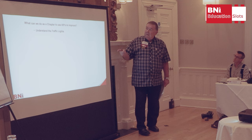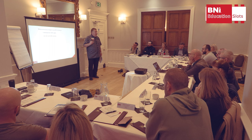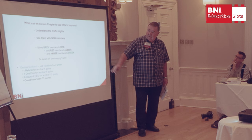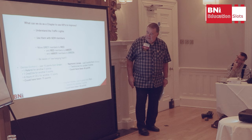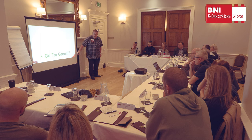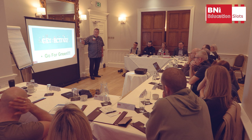So how can we become better? We need to understand the traffic lights — hopefully after today you understand a bit more, and I'm happy to have one-to-ones to explain them further. Use them with new members; make sure new members know the activity they need to do to get easy points. Get grey members into red, red members into amber, and amber members into green. Look out for low-hanging fruit — one testimonial would have got Raymond Jones into amber, and any of those small actions would have got Denise into the green. So what I want you to do is go for green. Get active.